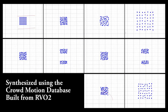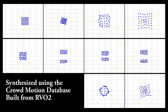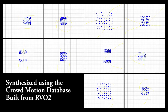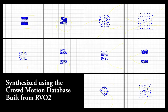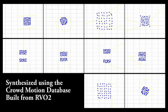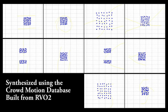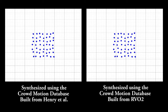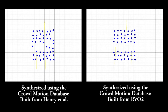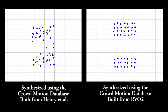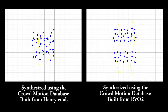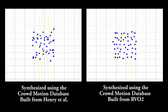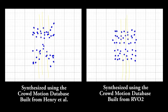To show that our system is compatible with databases built from different systems, we construct a database using car motions generated by the Aureo system. Here are some motions synthesized using the newly built database. We compare the synthesized motions generated with the database built from our method and that from the Aureo system. Both cars follow the gestures very well, though there are some differences in car behavior due to different database creation methods.